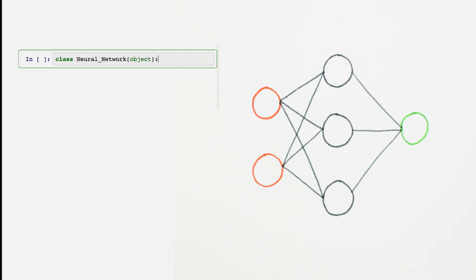We'll build our network as a Python class, and our init method will take care of instantiating important constants and variables. We'll make these values accessible to the whole class by placing a self dot in front of each variable name.